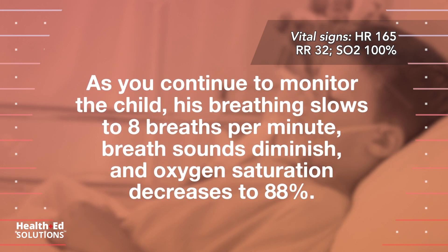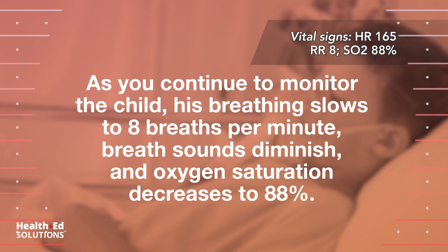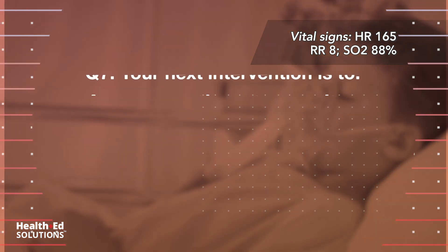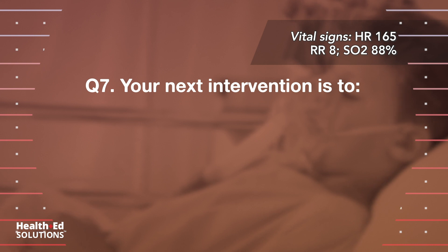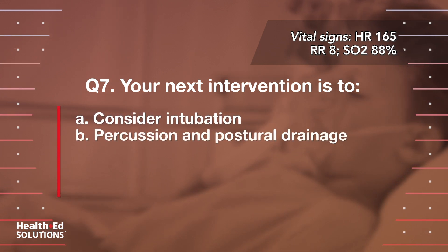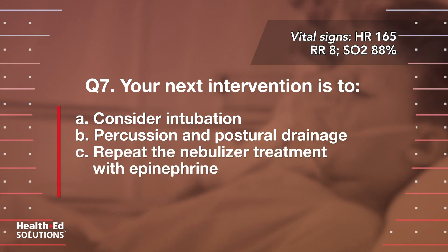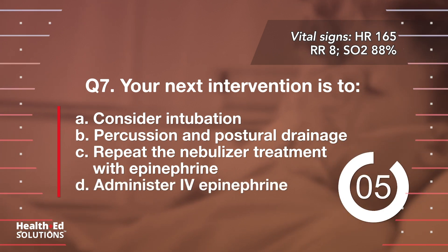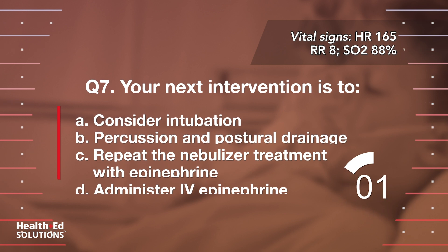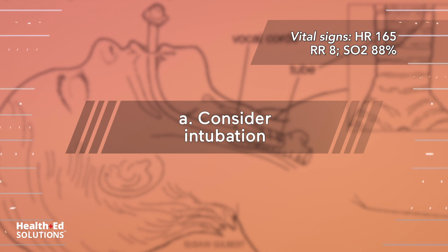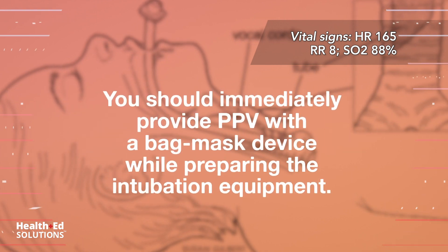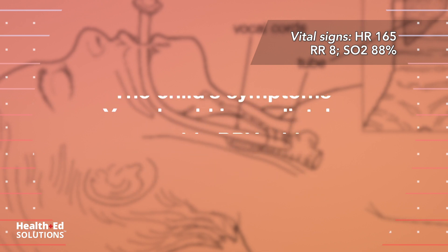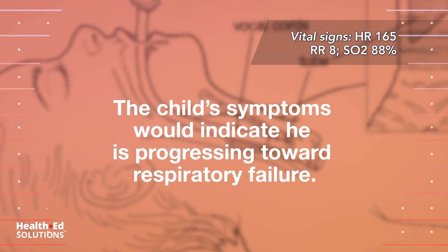As you continue to monitor the child, his breathing slows to 8 breaths per minute, breath sounds diminish, and oxygen saturation decreases to 88%. Question 7: Your next intervention is to: A) consider intubation; B) percussion and postural drainage; C) repeat the nebulizer treatment with epinephrine; D) administer IV epinephrine. Correct answer A — consider intubation. You should immediately provide PPV with a bag mask device while preparing the intubation equipment. The child's symptoms indicate he is progressing toward respiratory failure.